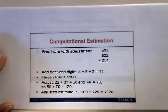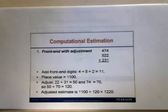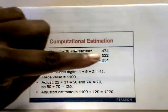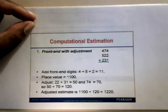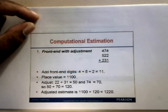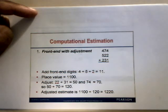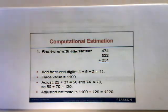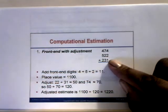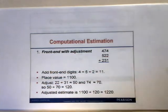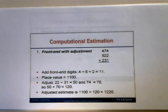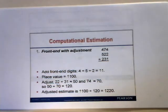For computational estimation, one technique is front-end estimation with adjustment. For 474 plus 522 plus 231, add the front-end digits 4, 5, and 2 to get 11, representing 1,100. Then adjust: 22 plus 31 is about 50, and 74 is approximately 70. So 50 plus 70 equals 120. The adjusted estimate is 1,100 plus 120, or approximately 1,220.